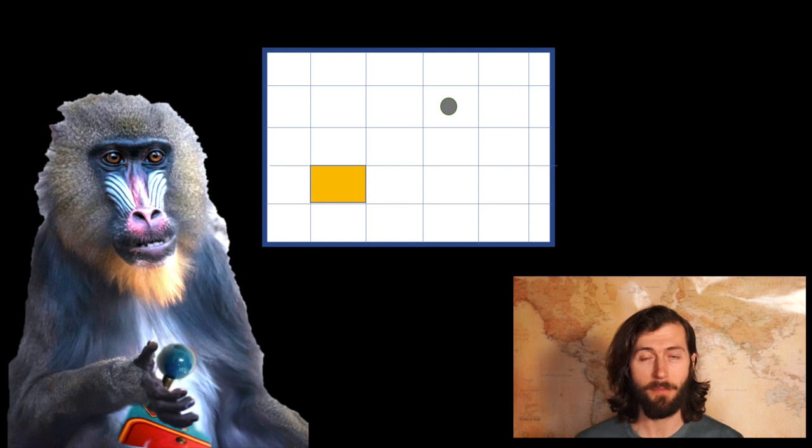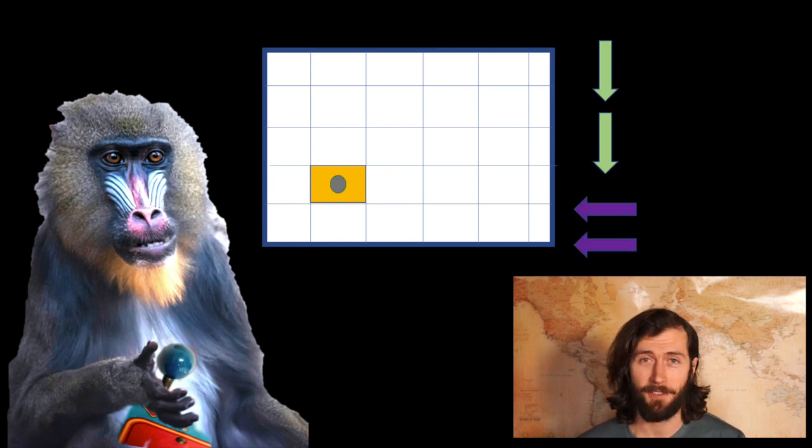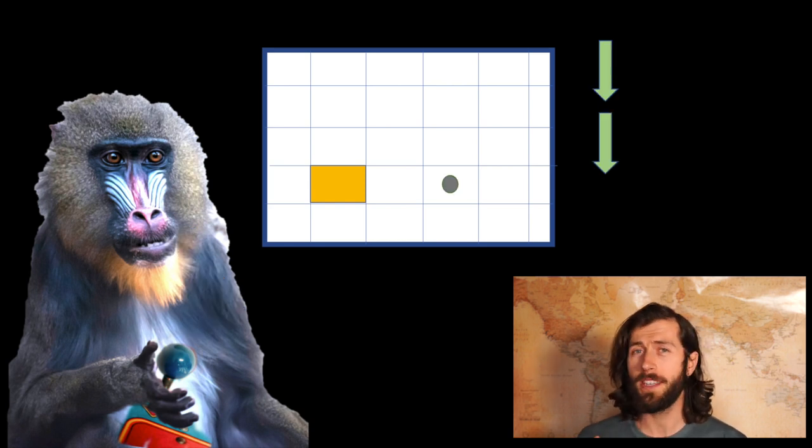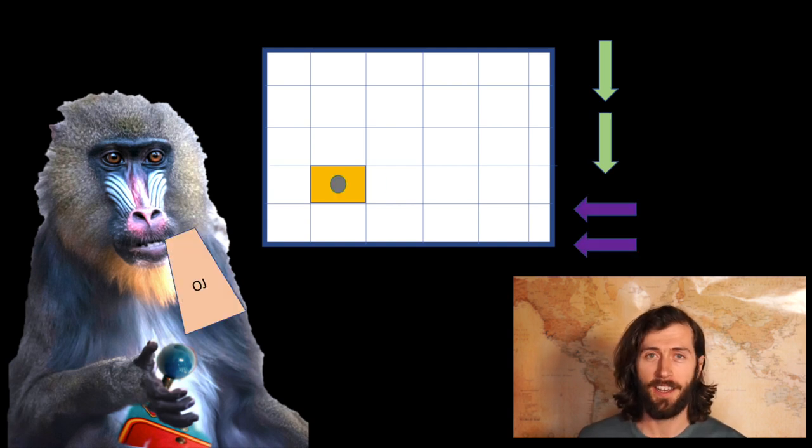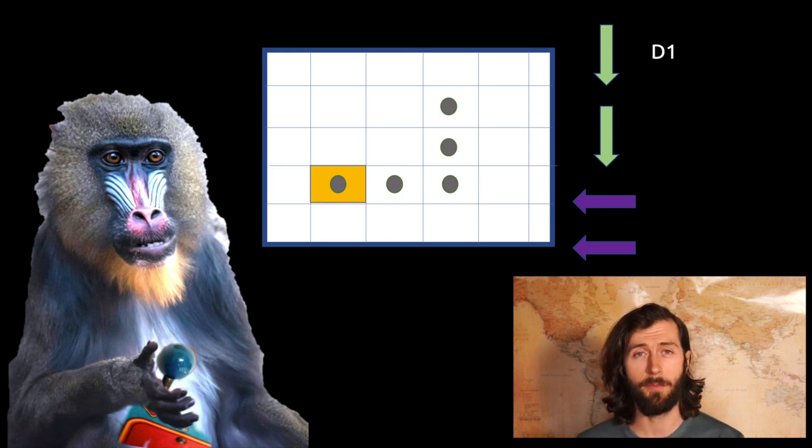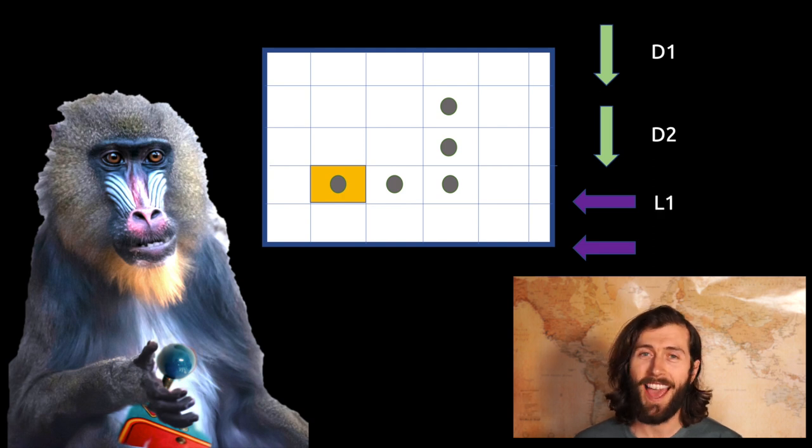In this example, the monkey might have to make a series of movements to reach a goal. In this case, he'll have to move down, down, left, and left. And then he gets his reward, some tasty orange juice. He would do this over and over again. But let's pull back and look at a single session. So in this case, he had to make four distinct movements with the joystick. And we might label each one accordingly. So for instance, this was the first time he moved down, the second time he moved down, the first time he moved to the left, and the second time he moved to the left.